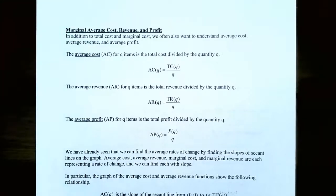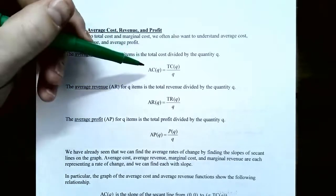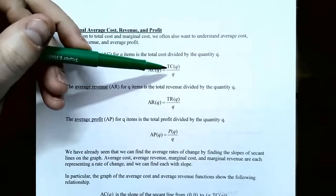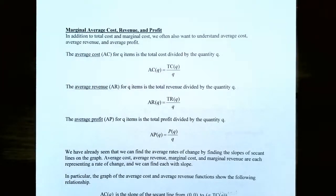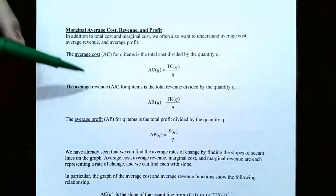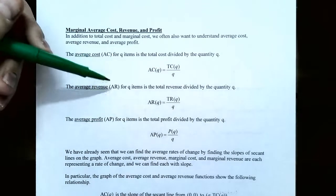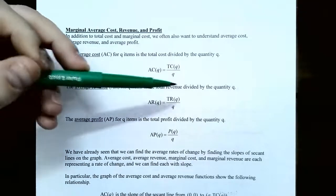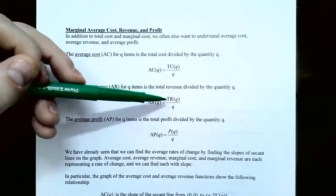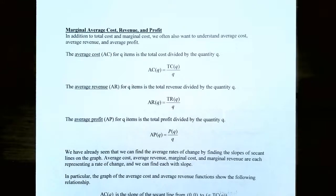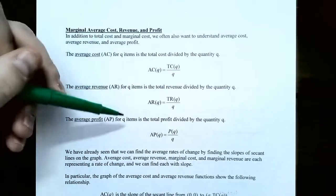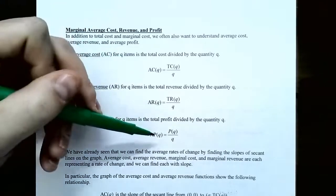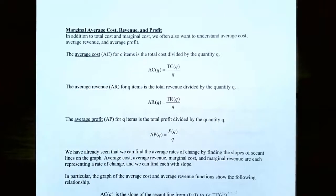The average cost, or AC, for Q items is the total cost divided by the quantity Q — it gives you the average cost per unit produced. So average cost of Q equals the cost function at Q units divided by Q. The average revenue, AR, for Q items is the total revenue function divided by Q, giving the average revenue per unit. And the average profit, AP, for Q units is the total profit divided by Q, telling you on average how much profit is earned per unit.